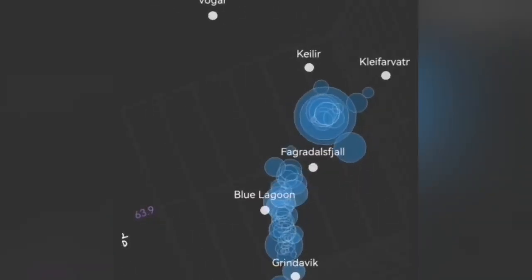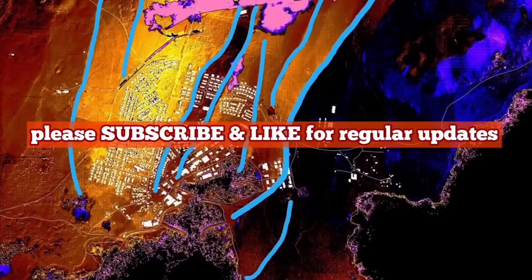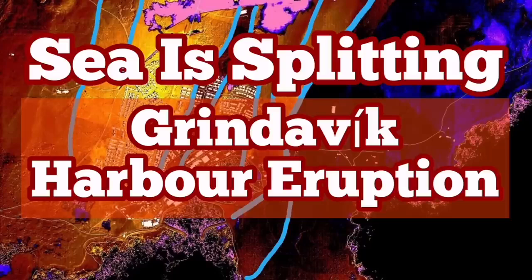Near the Svartsengi, we don't have. Sundhnukar, we have something, and now off the coast of the Grindavik, in the ocean, we see the rising of the earthquakes, means the magma is rising with it.